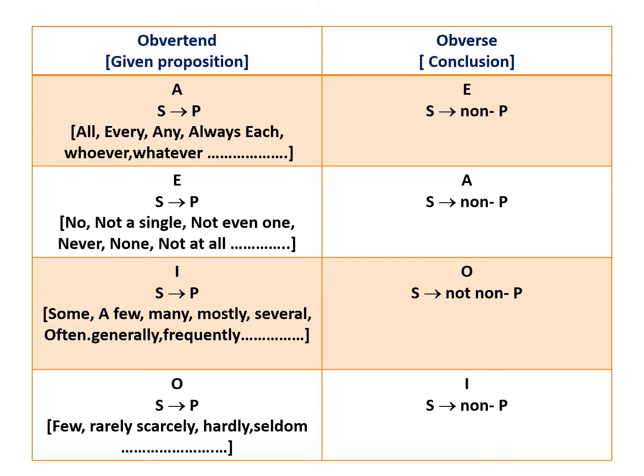Suppose in the given proposition, words like no, not a single, not even one, never, none, not at all are used, then it is an E-proposition. Suppose the basic symbolic form of E is given as 'no S is P', then its obverse will be A, that is 'all S is non-P'.